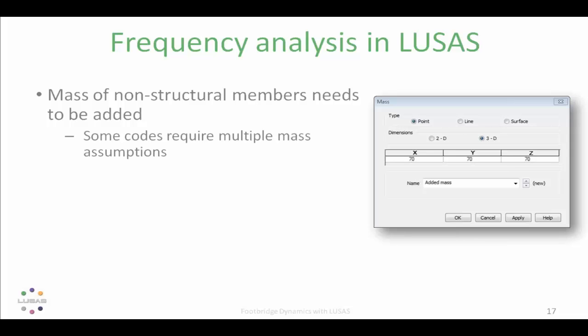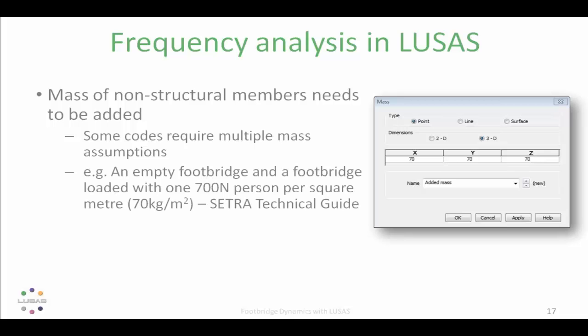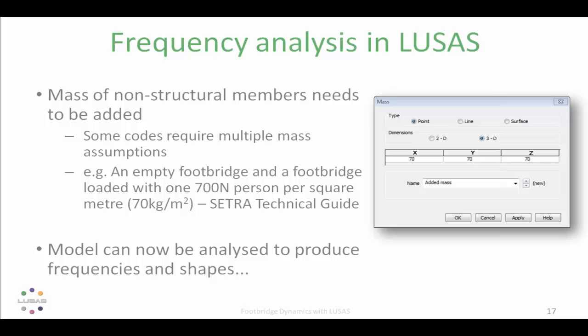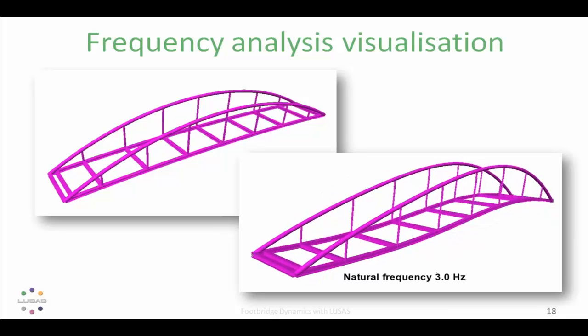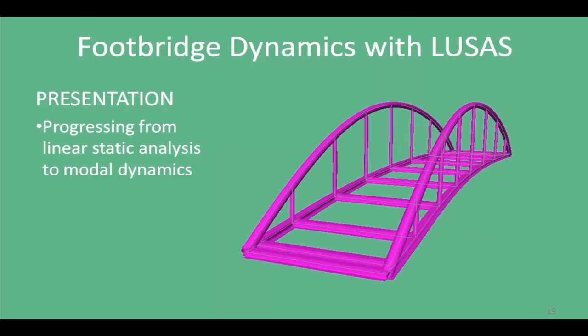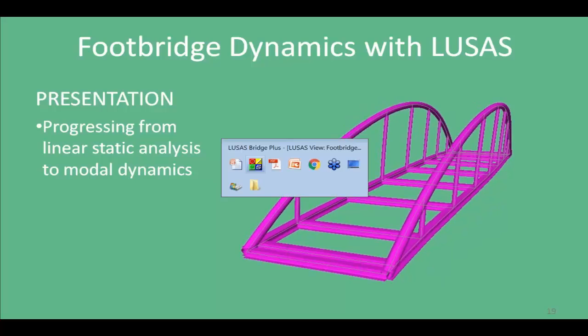We simply set an eigenvalue control and define the number of eigenvalues we want to look at. We can also add additional mass to the structure inside the dialogue. It should be noted that in some codes, multiple mass assumptions may be required. For instance, in the Sétra technical guide, we consider both an empty footbridge and a footbridge with additional person loading of 70 kilograms per metre squared. The model can then be analysed to produce frequencies and shapes — shown here with an isometric view of the bowstring arch and one of the fundamental frequencies.